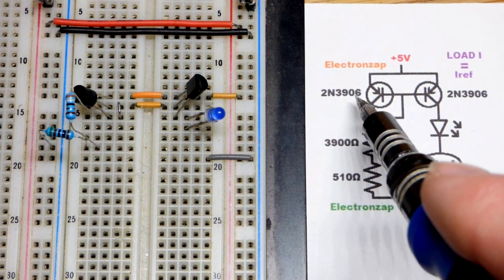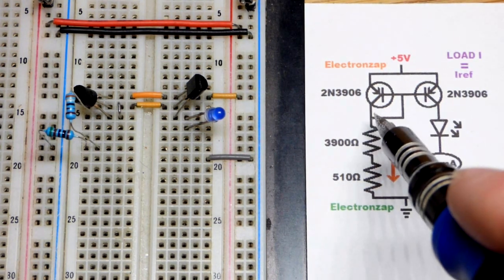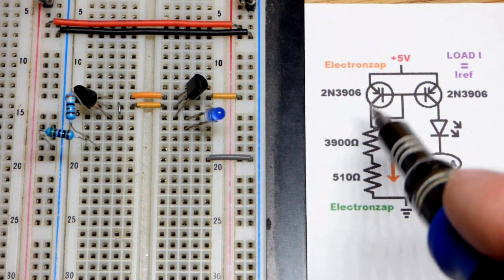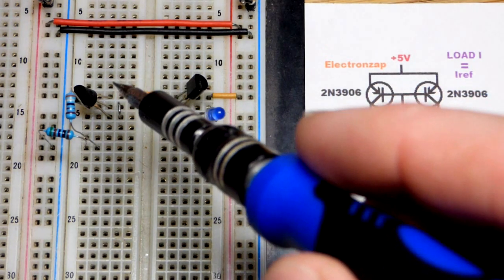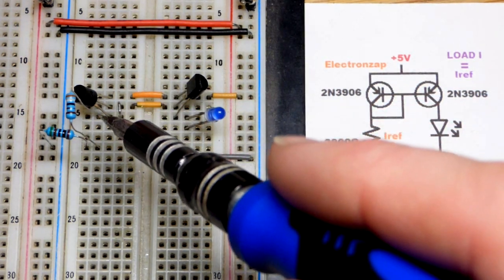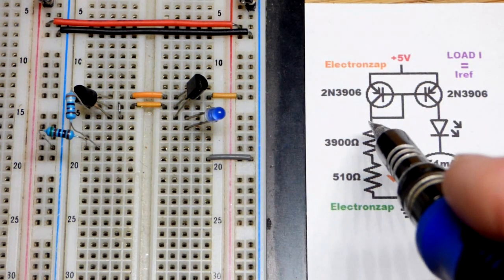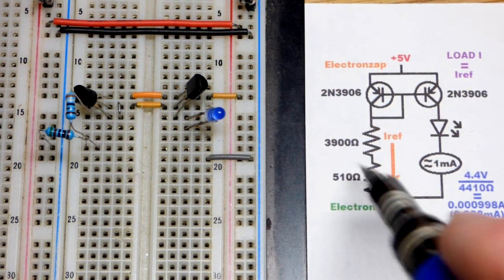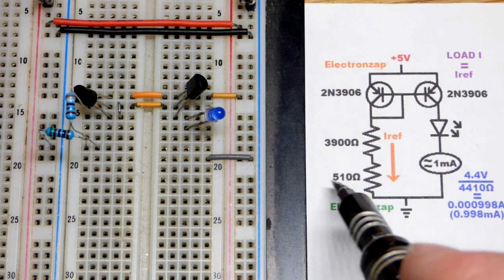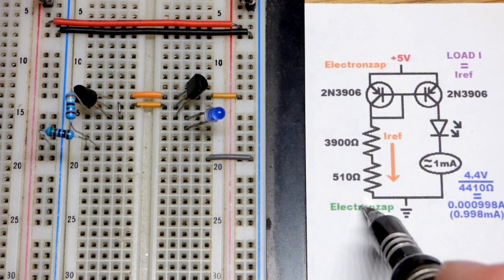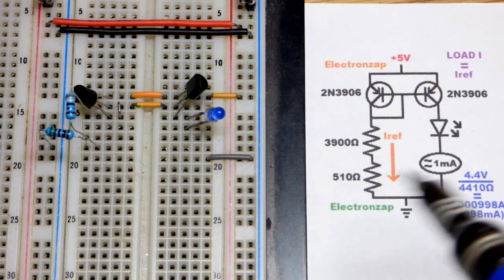So this is for the 2N3906. Other bipolar junction transistors PNP may have a different pin layout. But we got emitter on top, base in the middle, collector at the bottom coming to two resistors. So their resistance is going to add up. 3,900 plus 510 is 4,410 ohms of resistance. Remember they have tolerance so it won't be perfect.